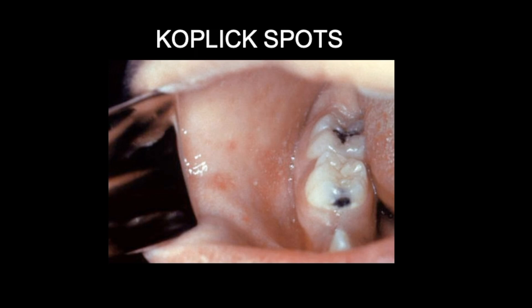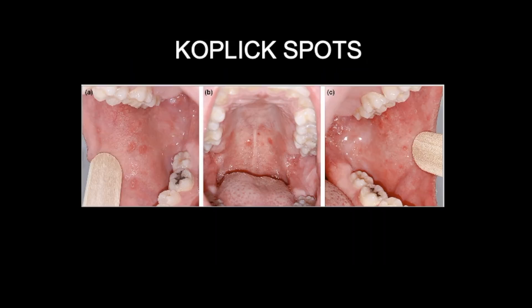Just to orientate you — teeth here, inside of the cheek here — and there's an instrument being used to pull back the cheek to give you a better view. Koplik spots are characterized as clustered white lesions on the buccal mucosa. The textbook description is ulcerated mucosal lesions marked by necrosis, neutrophilic exudate, and neovascularization. This next photo shows pointers as to where they are — inside of the mouth on the buccal mucosa you can see these ulcers, and little spots on the roof of the mouth and on the inside of the other cheek.